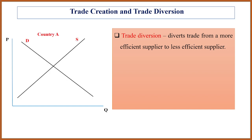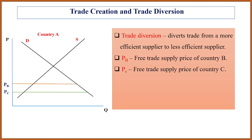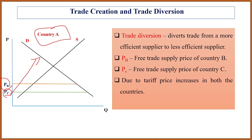Let's take an example. This is Country A's demand and supply curve. If Country A is willing to import a commodity from other countries — say Country B and Country C — Country C has the lowest price compared to Country B. Under a free trade situation with no tariff or non-tariff barriers, Country A will import from Country C because the price is lower. Now suppose there is an increase in tariff in both countries: the price in Country B rises from PB to PTB, and in Country C from PC to PTC.